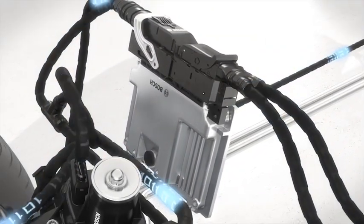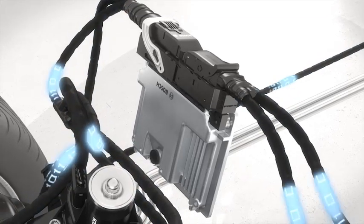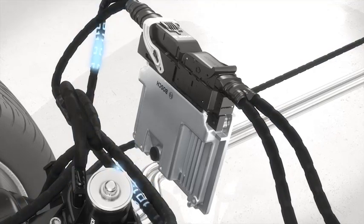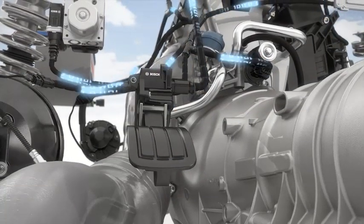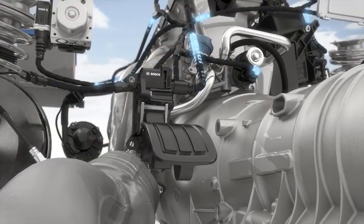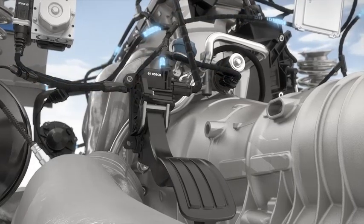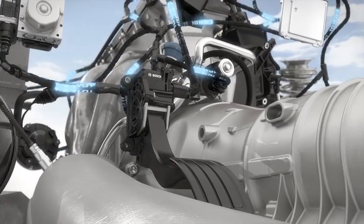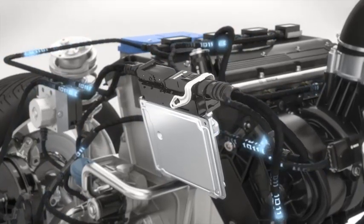The engine control system, Motronic, enables prioritizing and control of the numerous functions that an efficient engine management system must fulfill. The driver's desire for more or less torque is the key input variable affecting the electronic control. The accelerator pedal module communicates the driver's wish as a sensor signal, and the engine control unit calculates the torque using data obtained from various sensors.